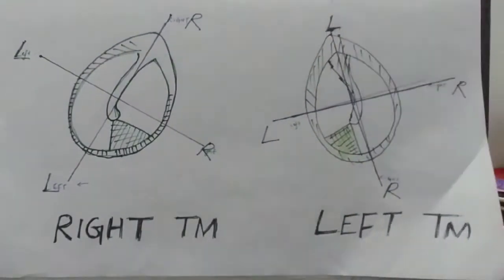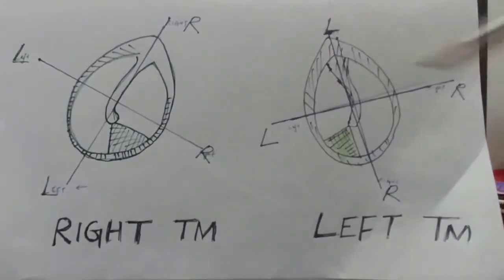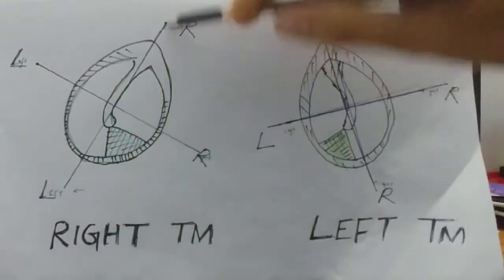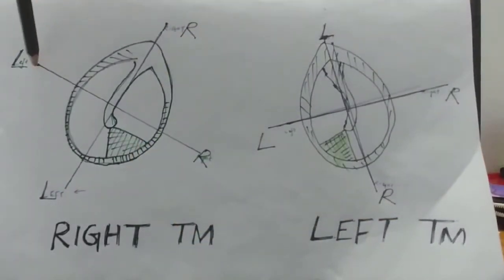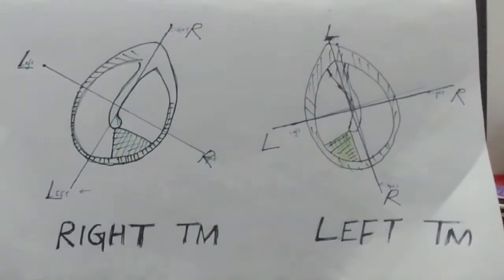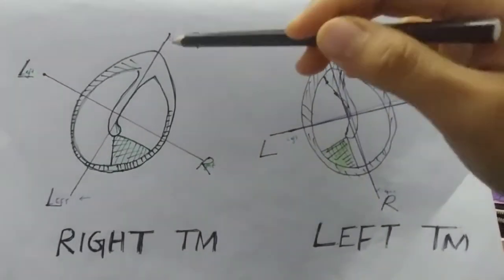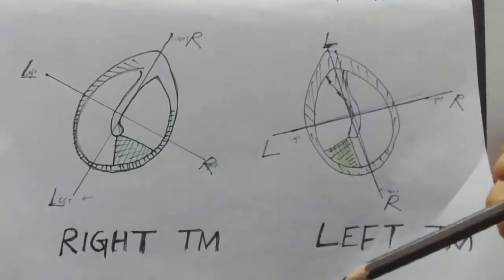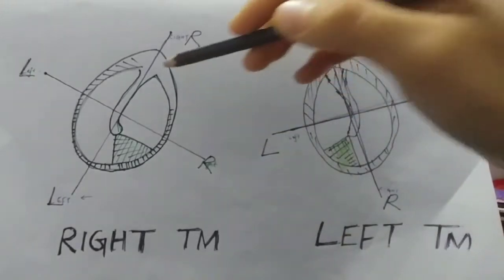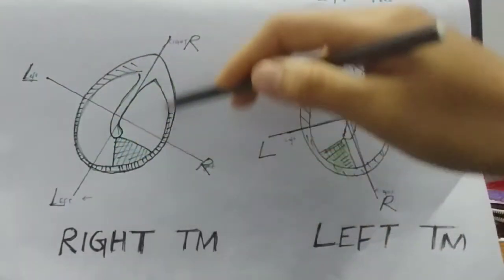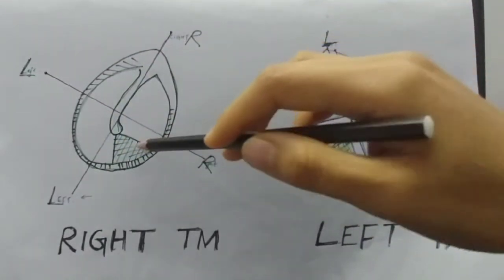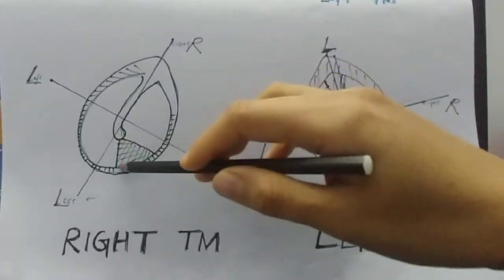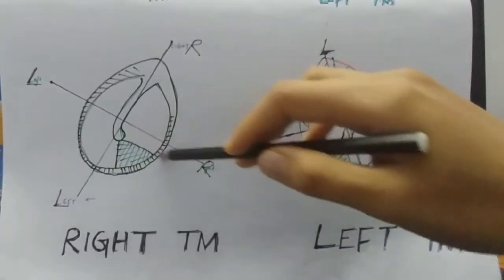Using this skeleton, I drew the right tympanic as well as the left tympanic membrane. It becomes very easy to draw the tympanic membrane once we have drawn the skeleton. This is the right tympanic membrane, and we can identify it by its cone of light — here the cone of light is towards the right side.